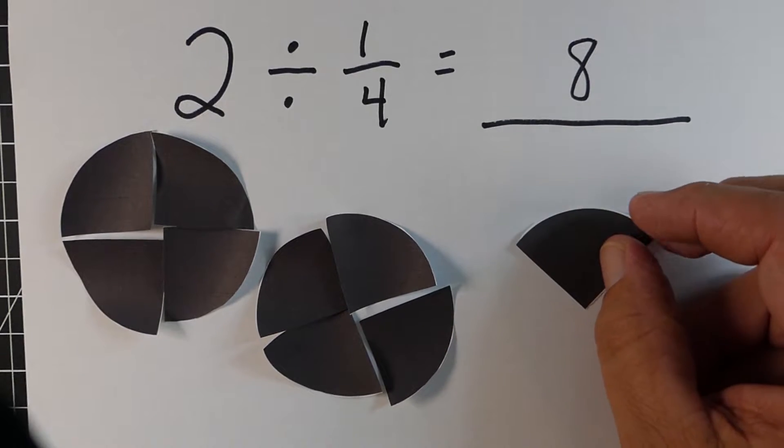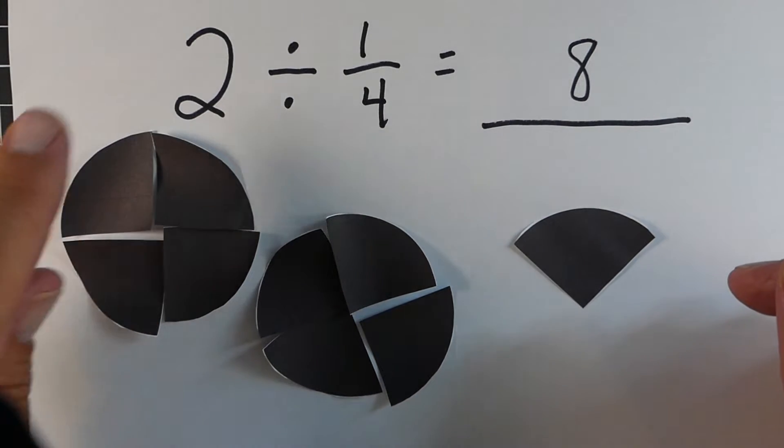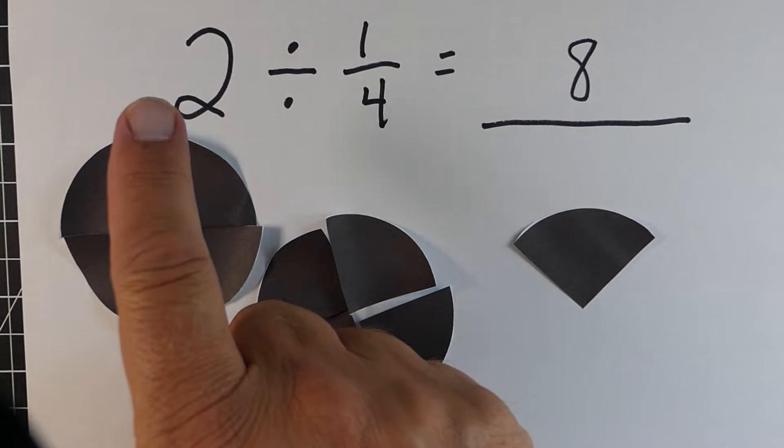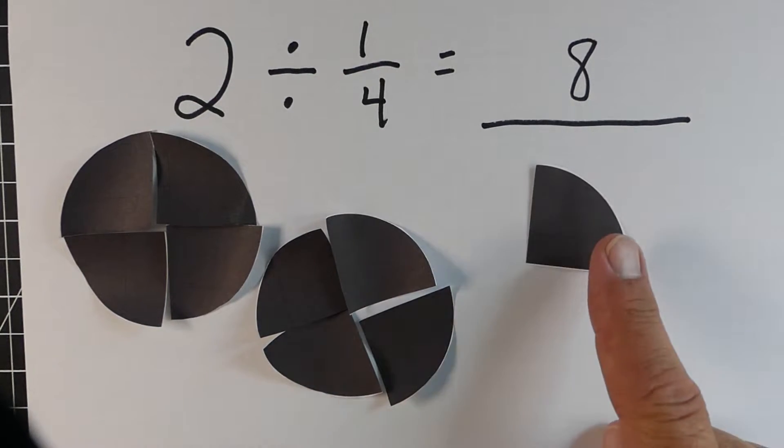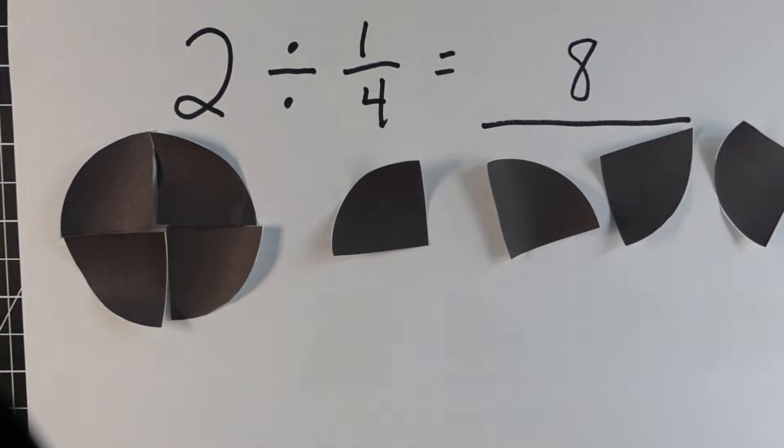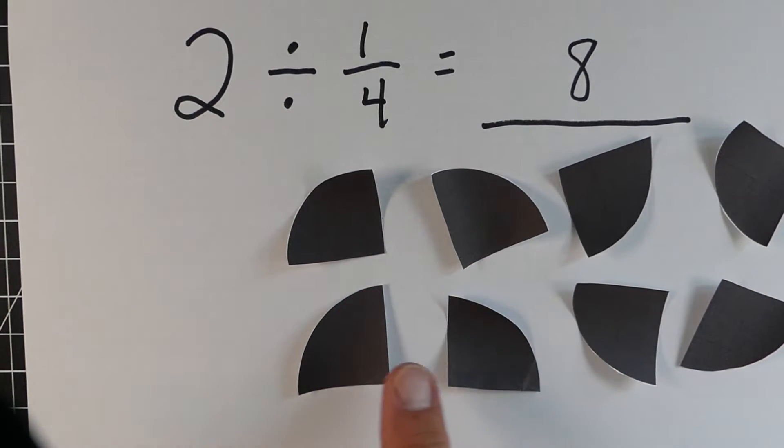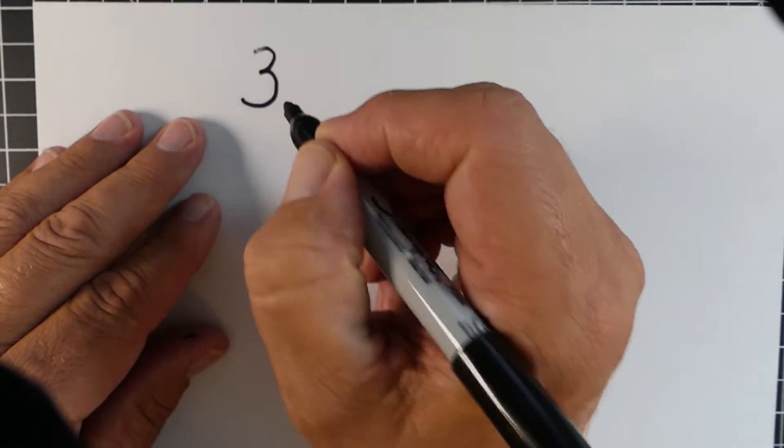So what we have here are two circles. So there's one and then there's the other one. And we're going to divide those by 1 fourth. And you can see right there that's 1 fourth of the circle. And if we do that we would end up with 8 one-fourth sections. So the 2 divided by 1/4 equals 8.